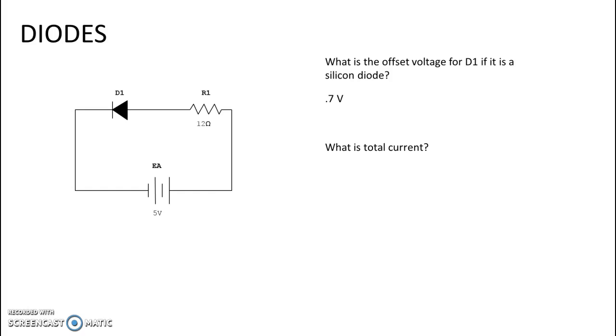So to figure total current, we're going to take that remaining 4.3 and divide it by 12. And that gives us 0.36 amps. So then what is the voltage on R1? Well, pretty simple. If the voltage on D1 is 0.7, then the voltage on R1 has to be 4.3 because 4.3 plus 0.7 gives us 5 volts, which is our applied voltage.